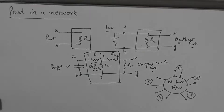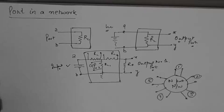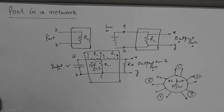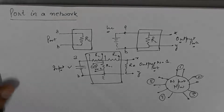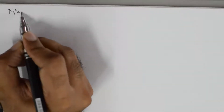Everything is logical — depending on how the network feeds other networks. Once we study ports in a network, we become concerned with studying network configurations in network analysis and synthesis. There are different network configurations, and it is very important from theory as well. We'll discuss all the network configurations in detail one by one. The first type of network configuration we discuss is the T-type network configuration.